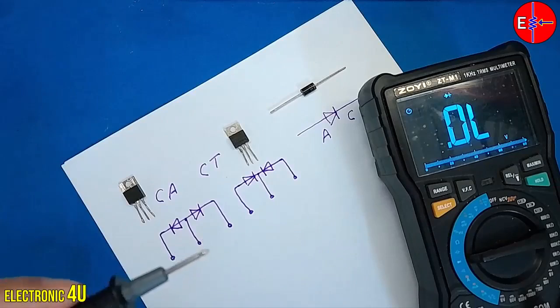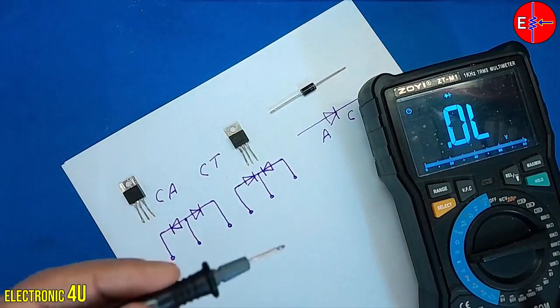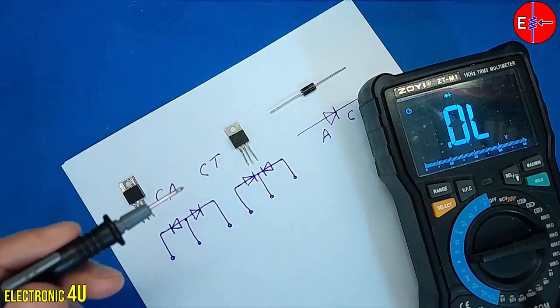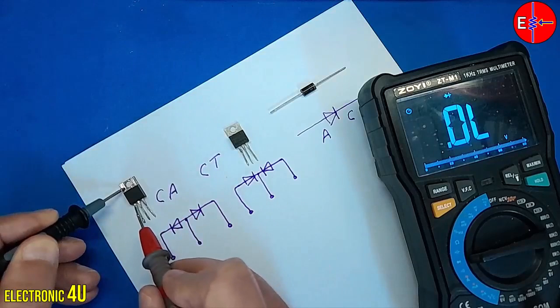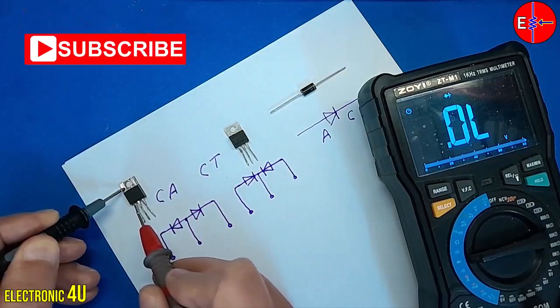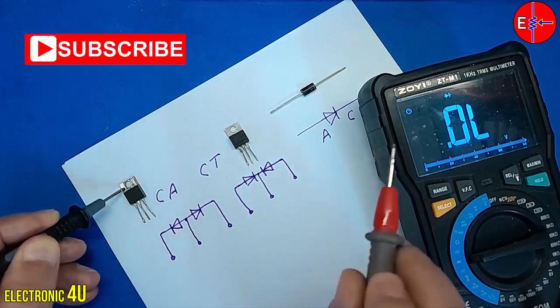If I swap the probes, no numbers should be displayed. If a number is seen, this diode is damaged. I will put a black probe on the middle pin. With the red probe, we select the other two pins. No number should be seen.